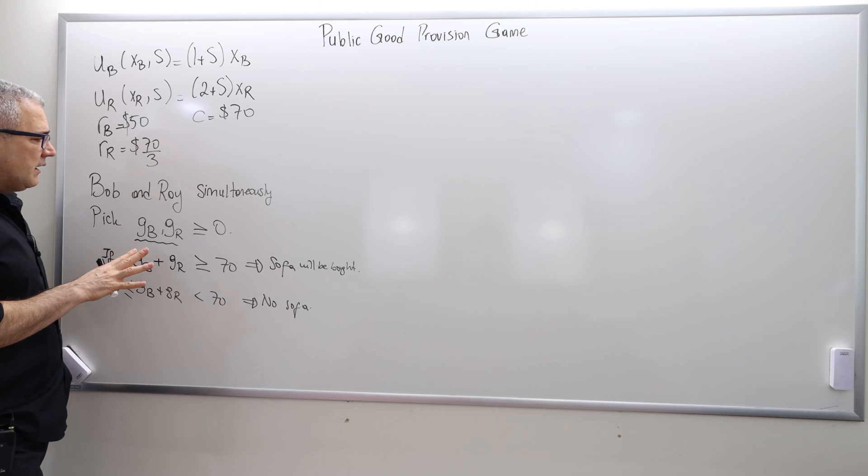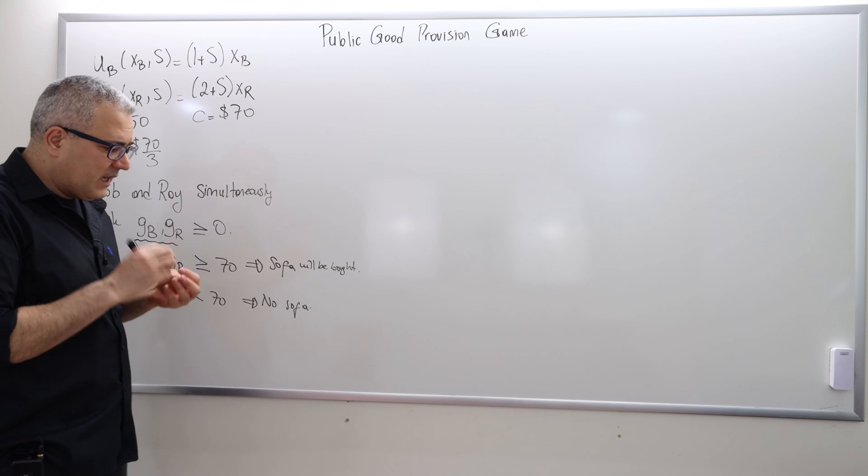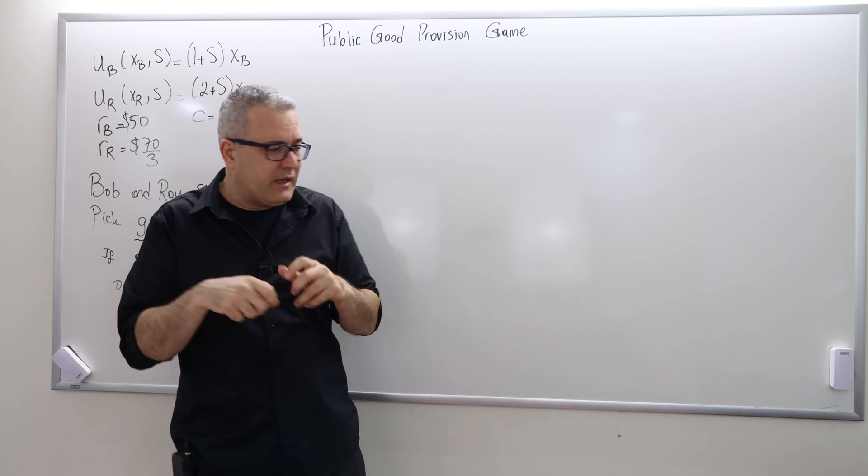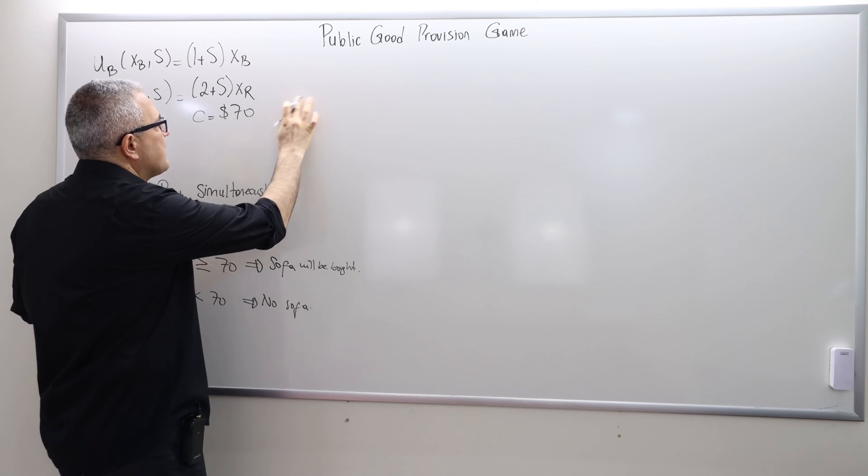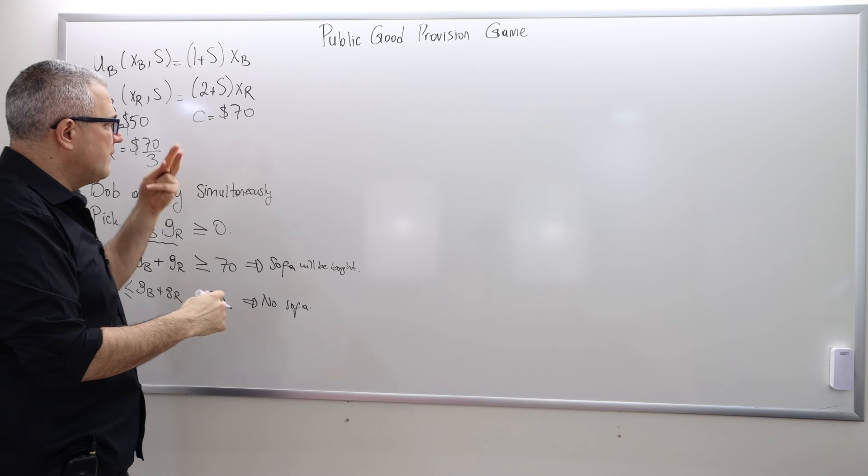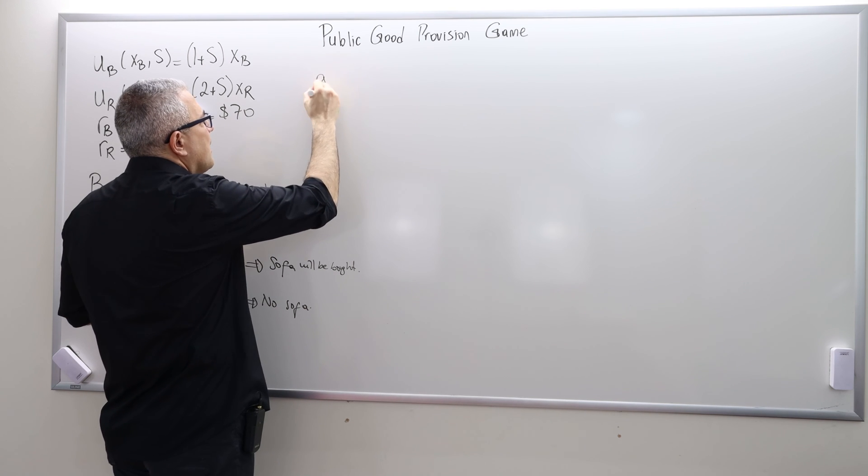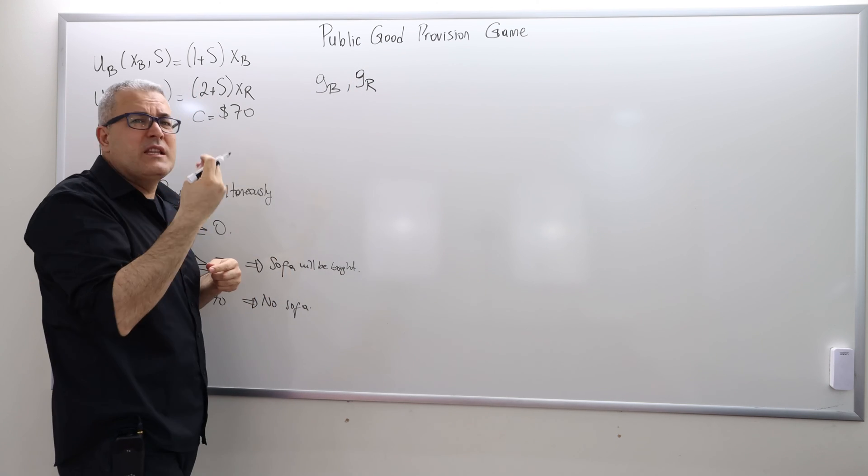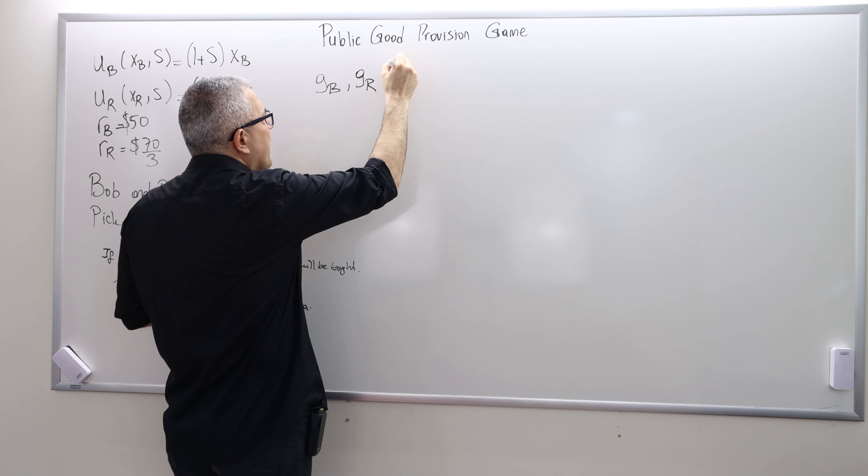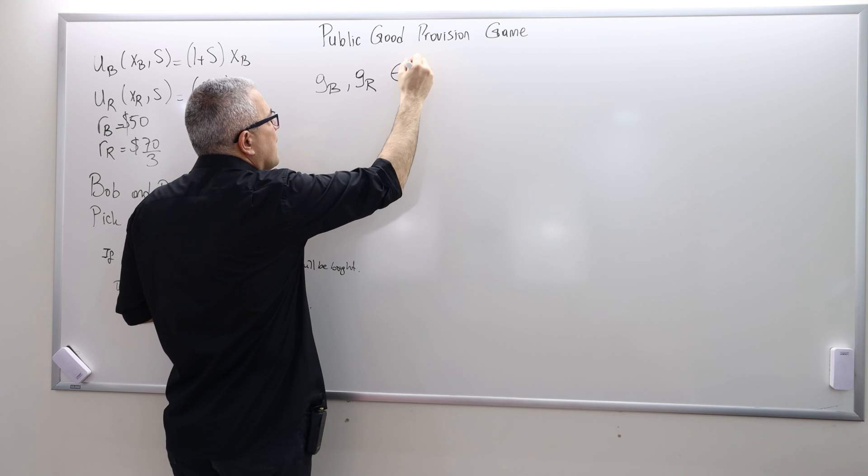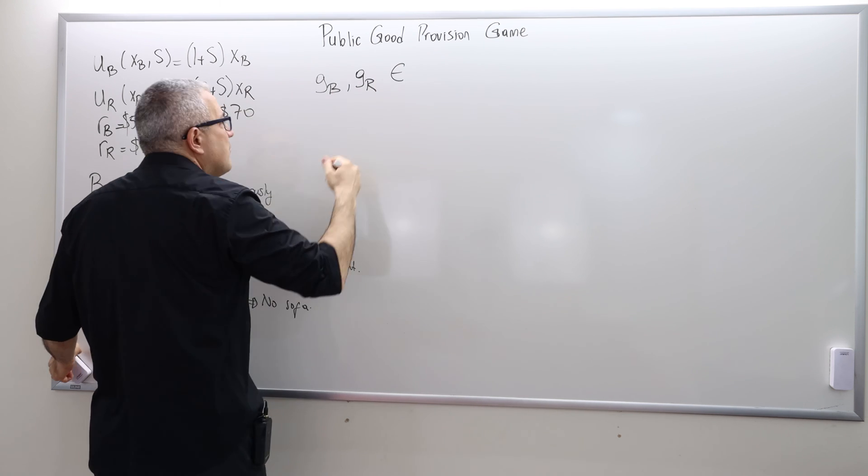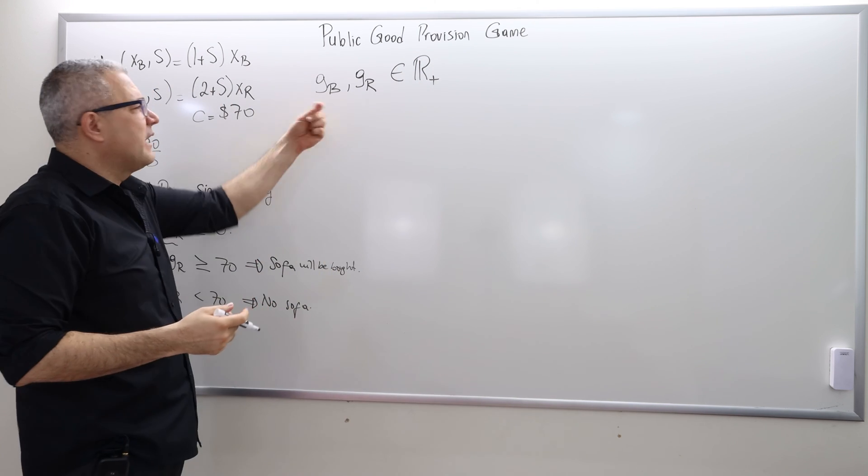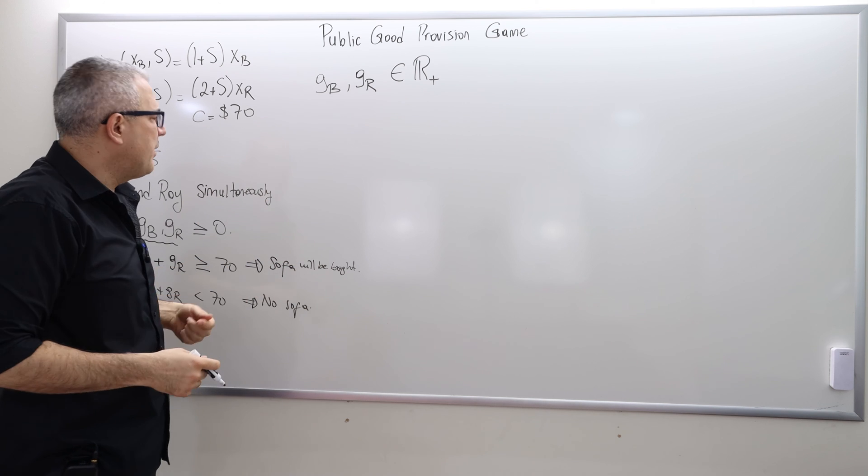So the game is, as I said, a simultaneous move game. They come together, Bob and Ray, simultaneously pick a number. So the players are, as I said, Bob and Ray, so two players. The strategies are GB for Bob and GR for Ray. Well, obviously they are some non-negative real numbers, because they are money, so how much they pick.